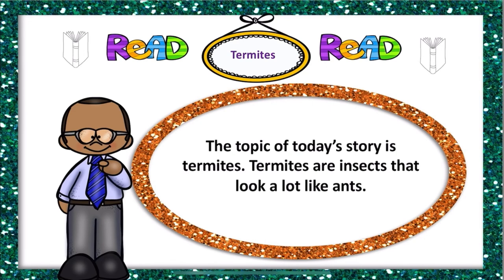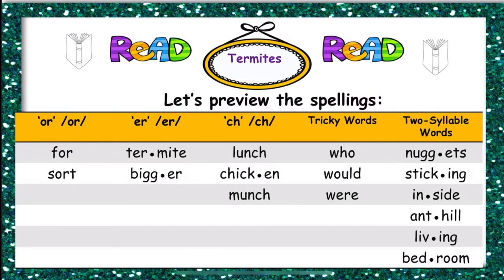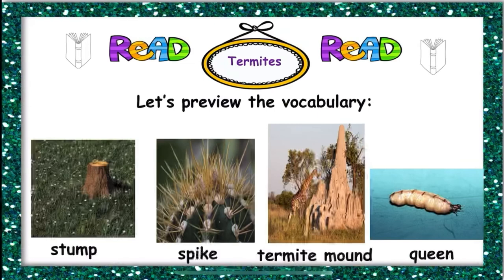The topic of today's story is termites — they are insects that look a lot like ants. Now let's review the spellings from the story. We have the 'or' sound as in 'four,' the 'er' sound as in 'termites' and 'bigger,' and the 'u' sound as in 'lunch,' 'chicken,' and 'munch.' Tricky words — words that don't play by the rules — include 'who,' 'would,' and 'where.' Our two-syllable words are 'nuggets,' 'sticking,' 'inside,' 'until,' 'living,' and 'bedroom.'